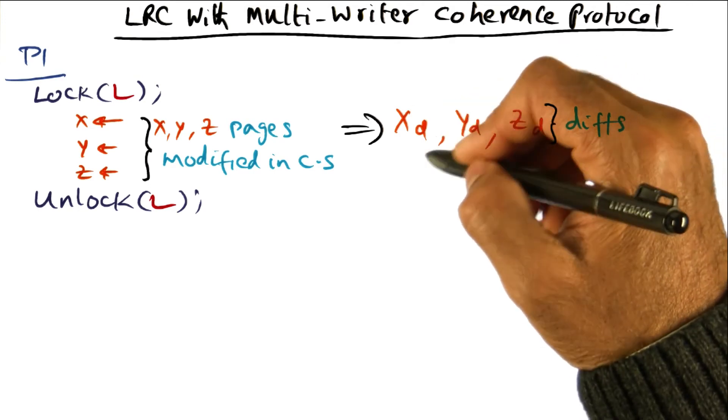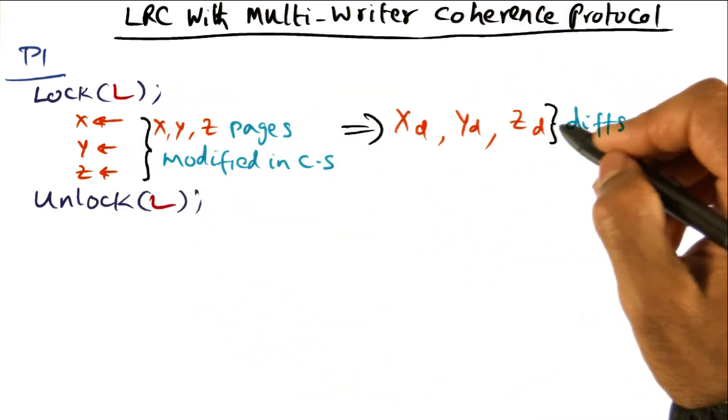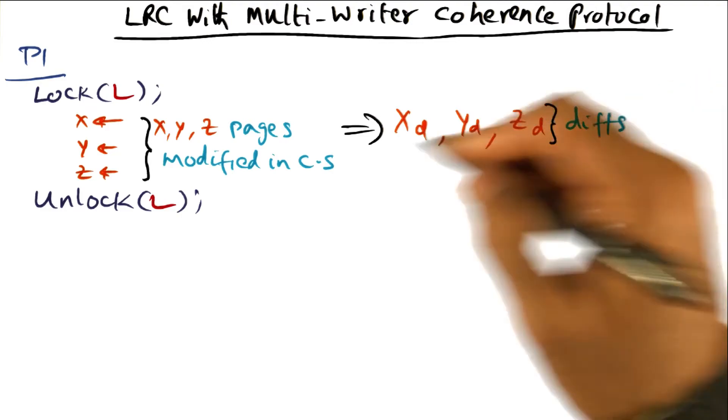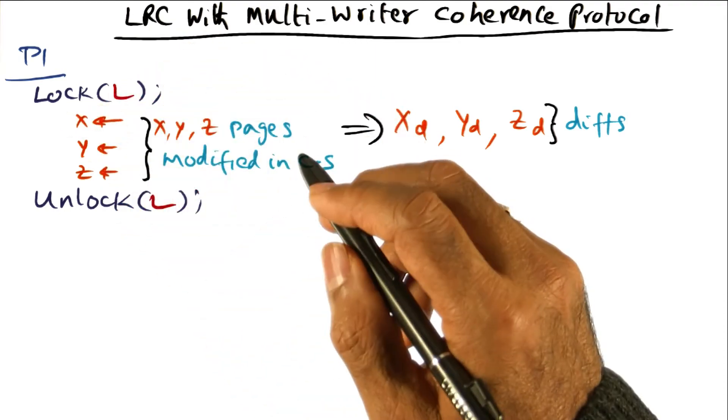We compute the diffs between the original page and the modified page. XD, YD, and ZD are the diffs to pages X, Y, and Z respectively, as a result of executing this critical section.